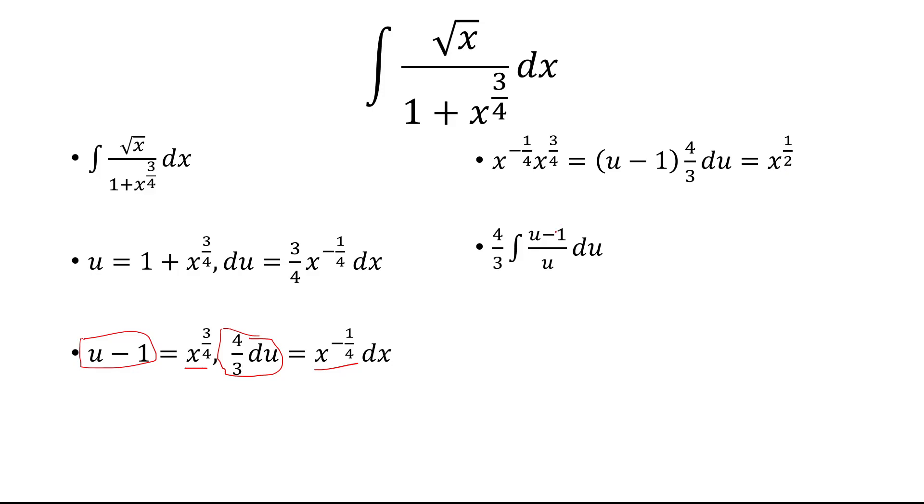So we have 4/3 times u minus 1 over u du. We split this up into two separate terms: 1 minus 1 over u du, and integrate.